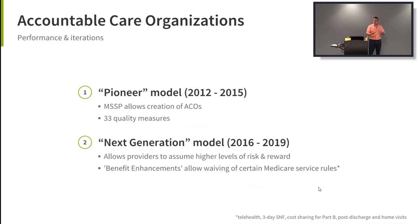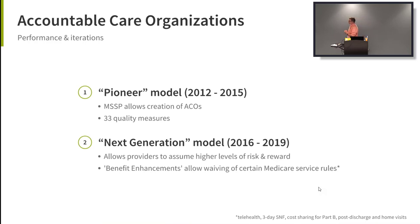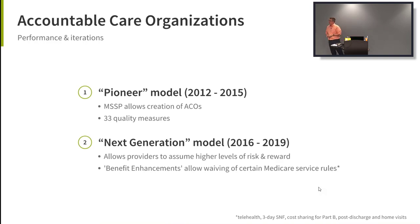Now on to performance and iterations. The ACO model has changed a couple of times. For the first three years it was called the Pioneer model, established right after the MSSP was created. It had a whole lot of quality metrics — about 33 measures — which have since been roughly halved. In 2016, the Next Generation model was introduced, offering even higher risk and higher reward options.